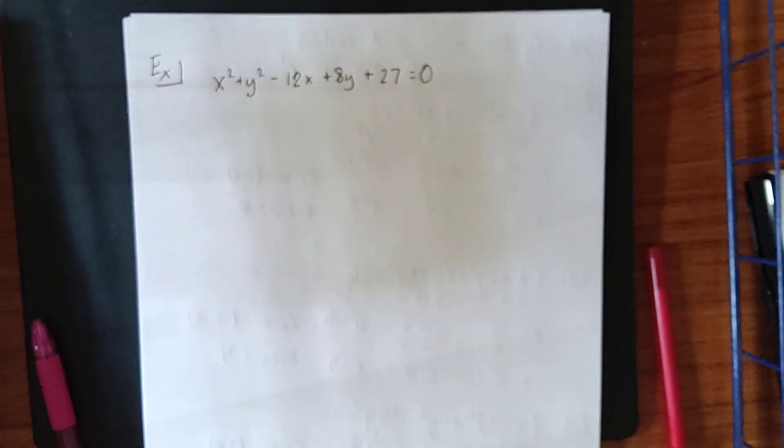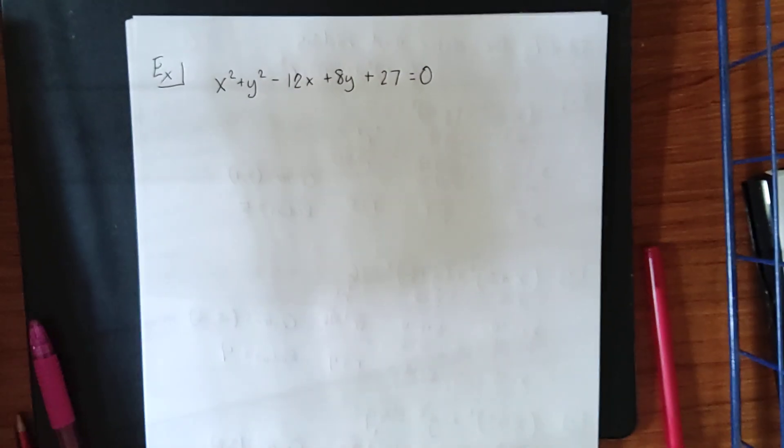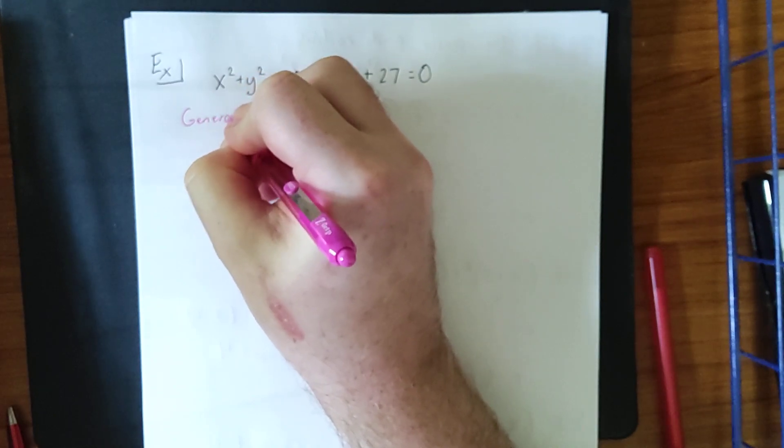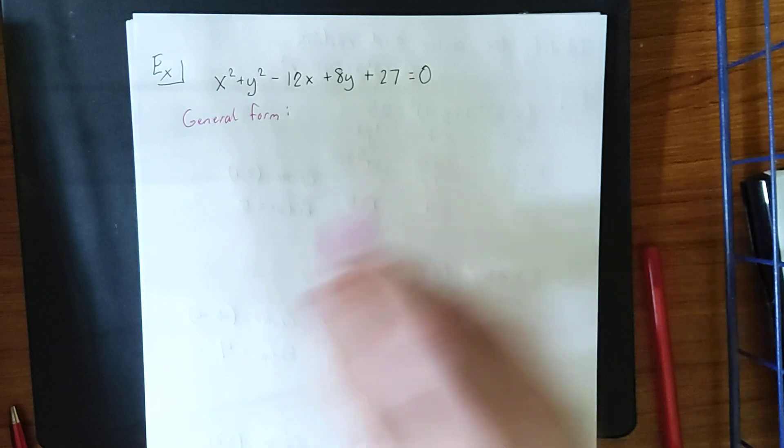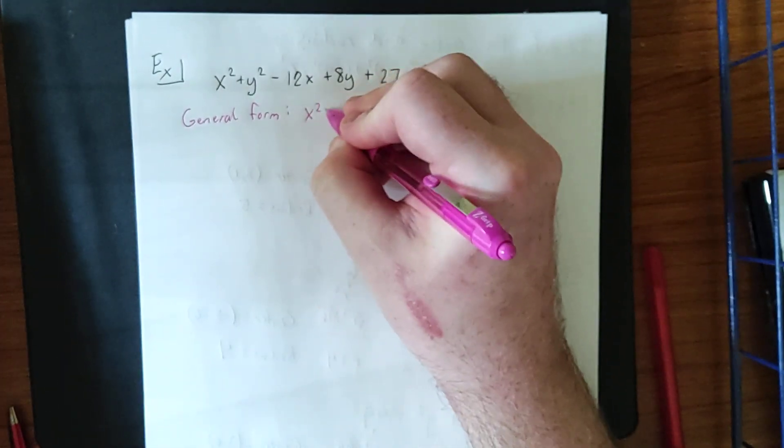Well, here's our trap. This is something that is not in standard form. This is referred to as the general form of a circle. The general form of a circle looks like the following. It would be what you would get if you took standard form and actually expanded it or foiled it all the way out.